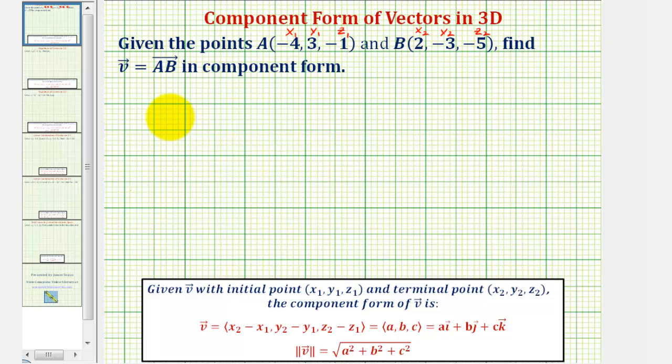So vector V, which would be the component form of vector AB, would have an X component of two minus negative four, a Y component of negative three minus three, and a Z component of negative five plus one, or negative four.